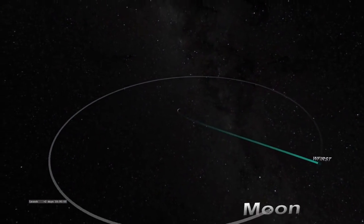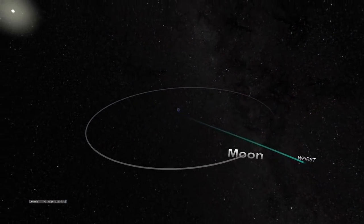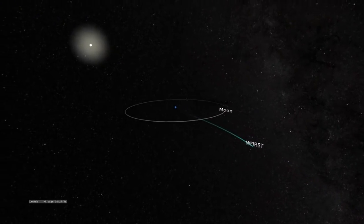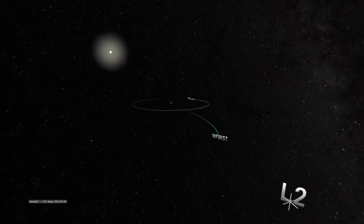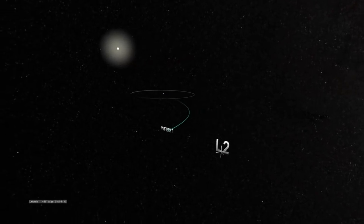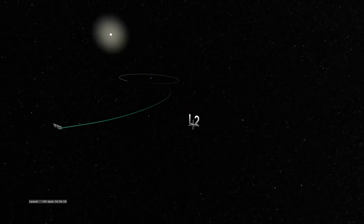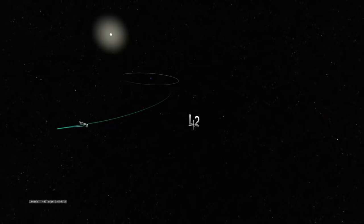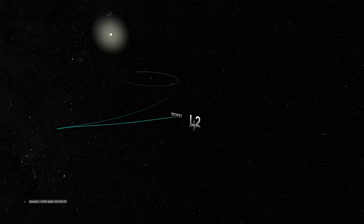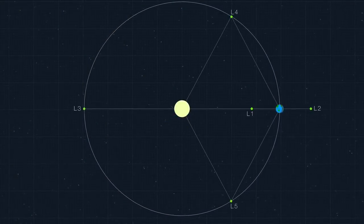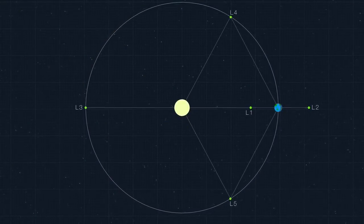In order to make all these measurements, WFIRST will move to nearly one million miles from Earth and orbit a special area of space called a Lagrange point. This particular point, called Earth-Sun L2, is one of several locations where the combined gravitational effects of the Sun and Earth create a zone of stability where spacecraft can pace Earth as it orbits.